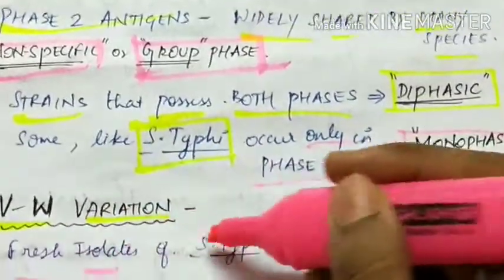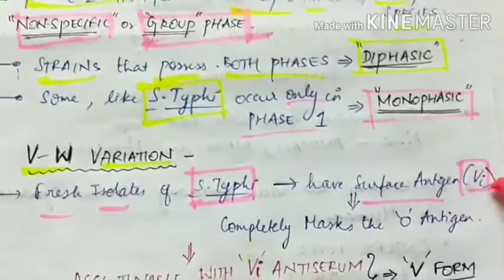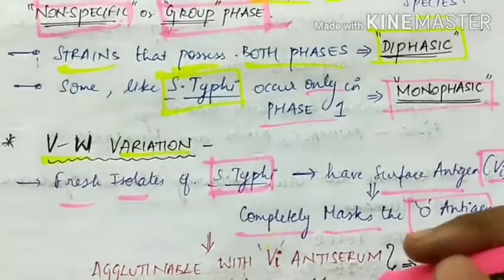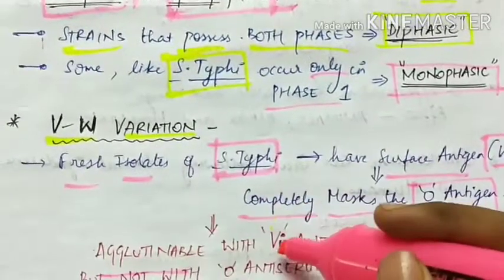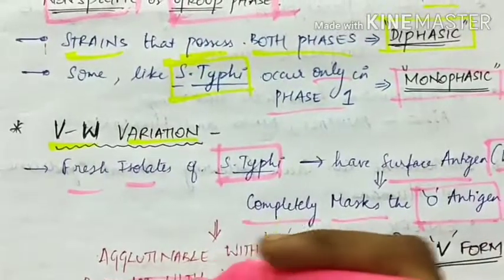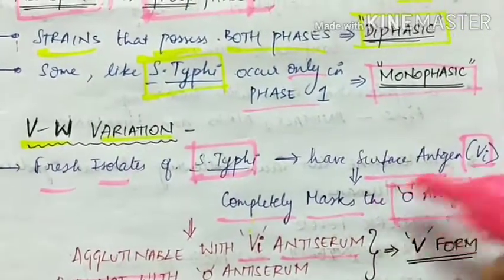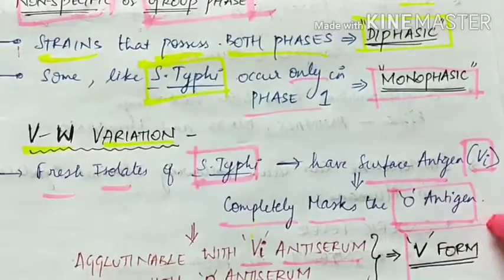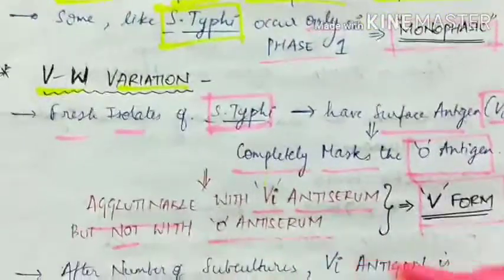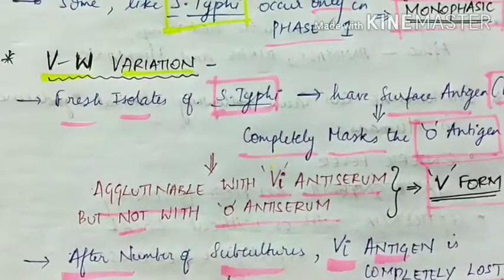The fresh isolates of Salmonella typhi have surface antigen Vi which completely masks the O antigen. So they are agglutinable with Vi antiserum, but they are not agglutinable with O antiserum as the O antigen is masked by Vi antigen. Such forms are called as V form.